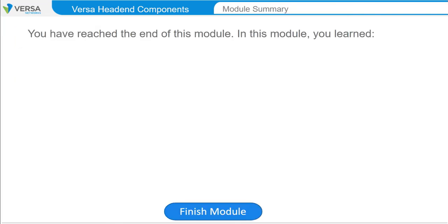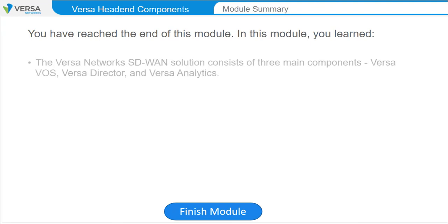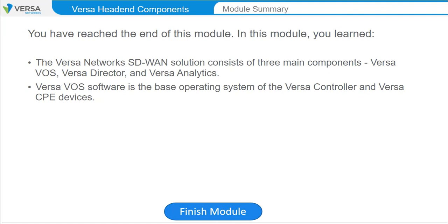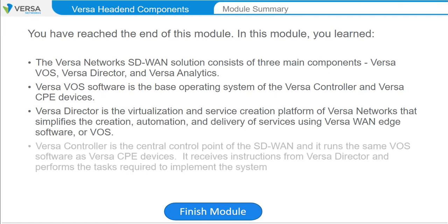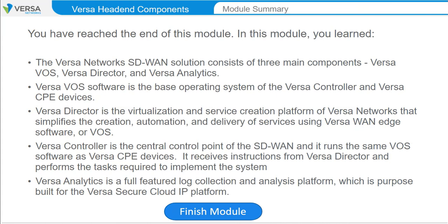You have reached the end of this module. In this module, you learned that the Versa Networks SD-WAN solution consists of three main components: Versa VOS, Versa Director, and Versa Analytics. Versa VOS software is the base operating system of the Versa Controller and Versa CPE devices. Versa Director is the virtualization and service creation platform of Versa Networks that simplifies the creation, automation, and delivery of services using Versa WAN Edge software, or VOS. Versa Controller is the central control point of the SD-WAN and runs the same VOS software as Versa CPE devices. It receives instructions from Versa Director and performs the tasks required to implement the system. Versa Analytics is a full-featured log collection and analysis platform, which is purpose-built for the Versa Secure Cloud IP platform.